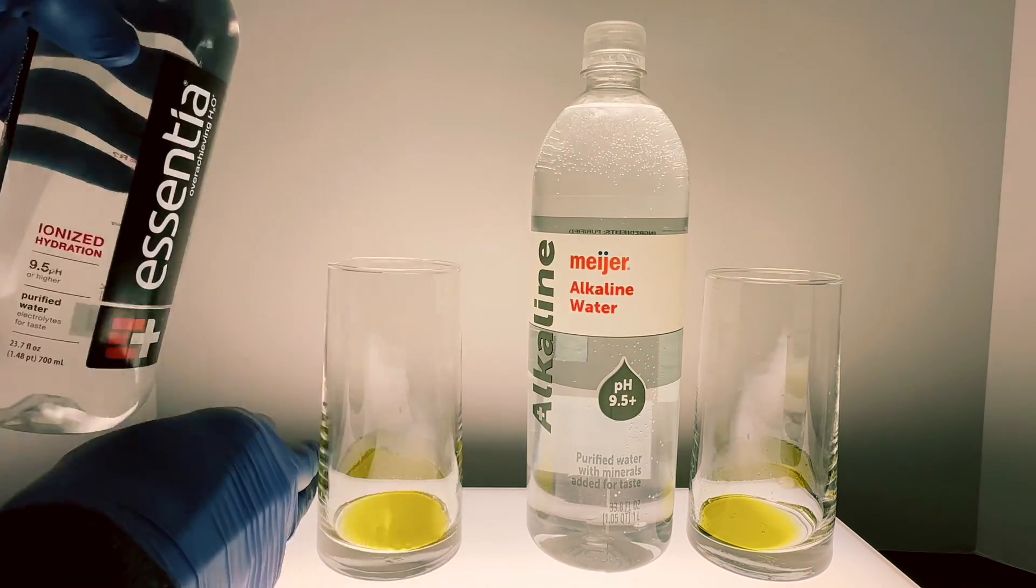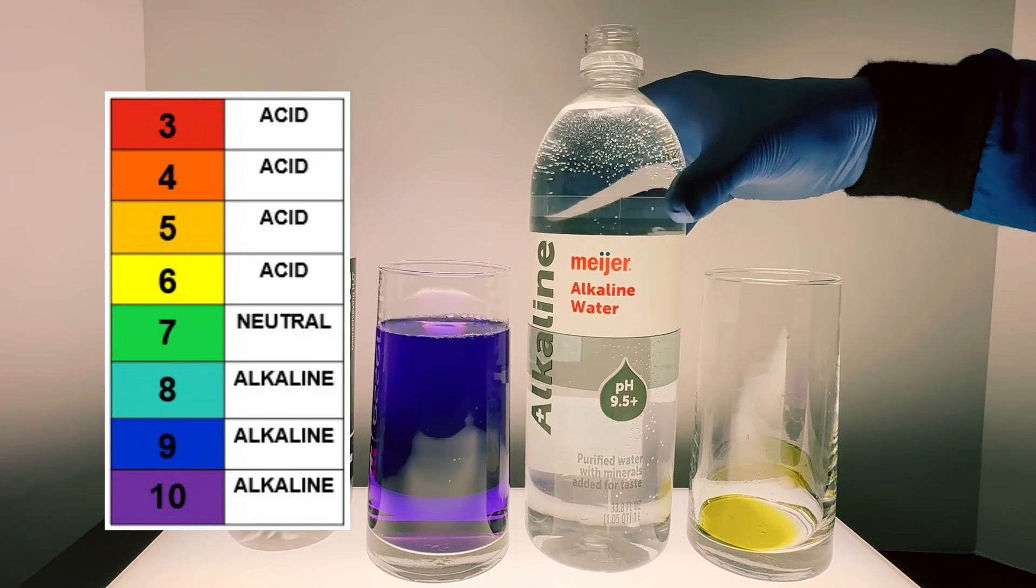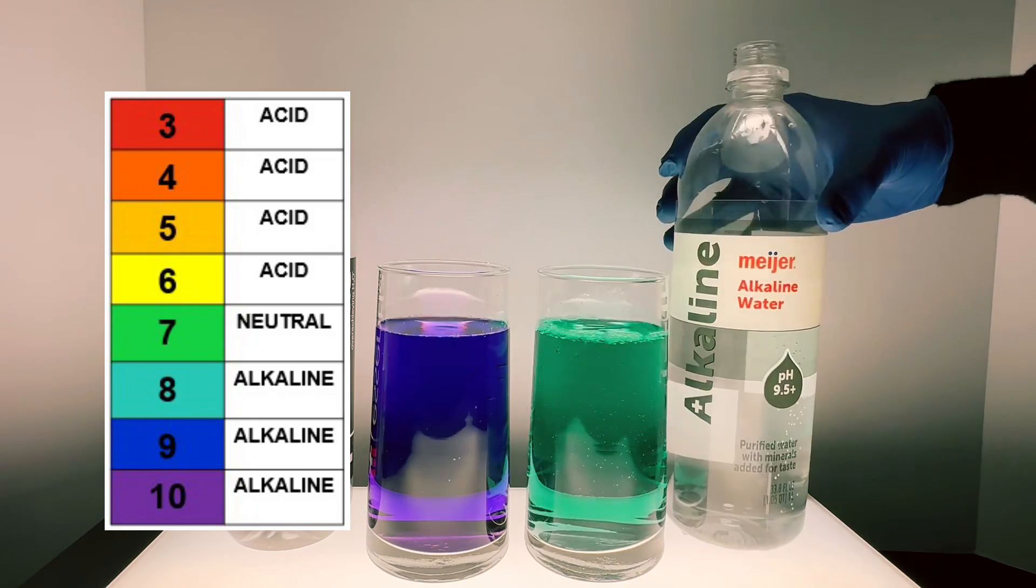While doing so, I found that Essentia water has a pH of 9 or 10, but Meijer brand water has a pH of 7, so it's neutral and not alkaline as it claims on the packaging.